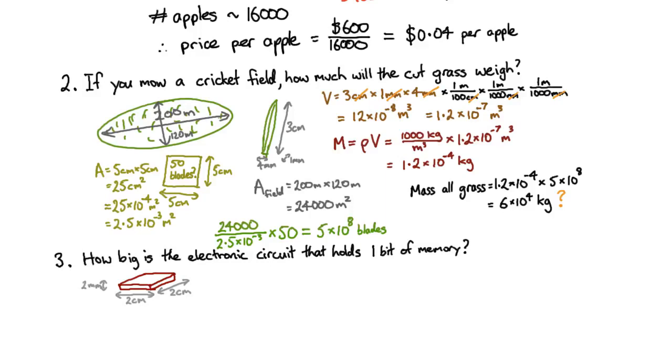Now a gigabit is a billion, so 64 gigabits is 6.4 by 10 to the 10 bits, or thereabouts. So if I want to work out the volume for a single bit, it's the volume of this whole object here, this whole chip, divided by the number of bits.